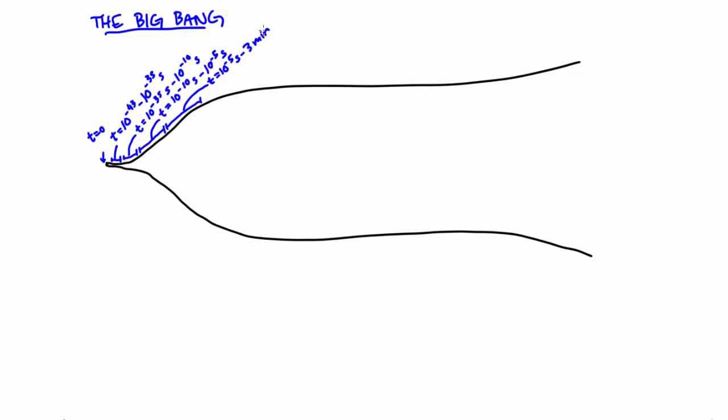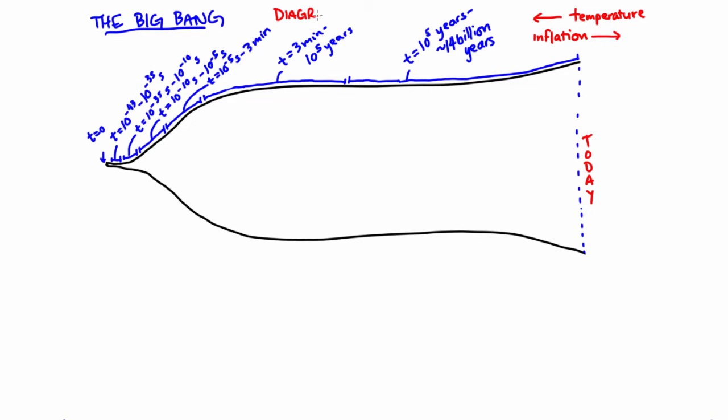On this diagram here, I'm going to go through the different time periods since the Big Bang and what we know about each of them. As I said, at t equals zero, that's when the Big Bang begins. We don't know why or how.